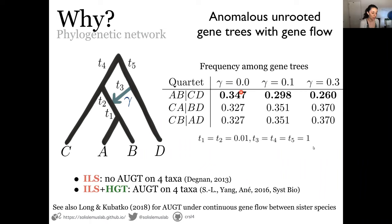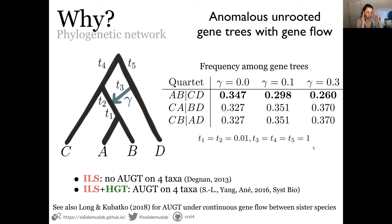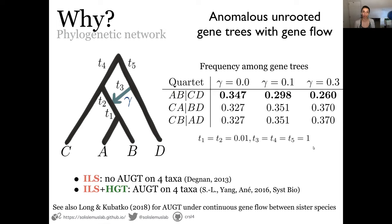If gamma equals zero, the proportion of gene trees with the AB clade is higher than those without it — 35 out of 100 gene trees display the AB split, giving it the highest frequency. But if we introduce gene flow, with gamma equal to 0.1 or 0.3, these frequencies flip: the split that agrees with the underlying tree suddenly has the smallest frequency or smallest probability.